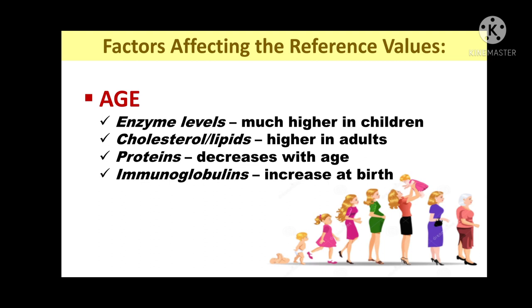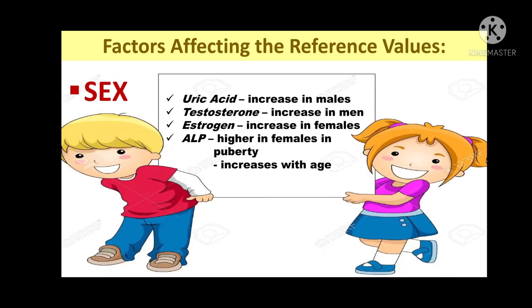How does age affect reference values? When you are still a child, enzyme levels are quite high because metabolism is also fast, and you are still developing. Cholesterol or lipids are also higher in adults, probably because of diet. Proteins decrease as we age, and immunoglobulins increase at birth. For sex differences, males have higher uric acid amounts than females. Testosterone is obviously increased in men, while estrogen is increased in females. Alkaline phosphatase is higher in females during the puberty stage, but ALP increases with age.